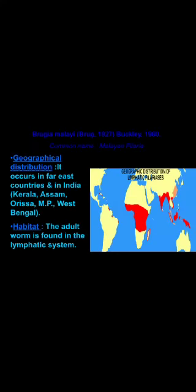The other important filarial worm which causes disease in humans is Brugia malayi. Brugia malayi is seen in tropical and subtropical countries. In India, it is very common along the coastline in states of Kerala, Assam, Orissa, Madhya Pradesh, and West Bengal. The adult male and female worms reside in the lymphatic system, similar to the adult worms of Wuchereria bancrofti.